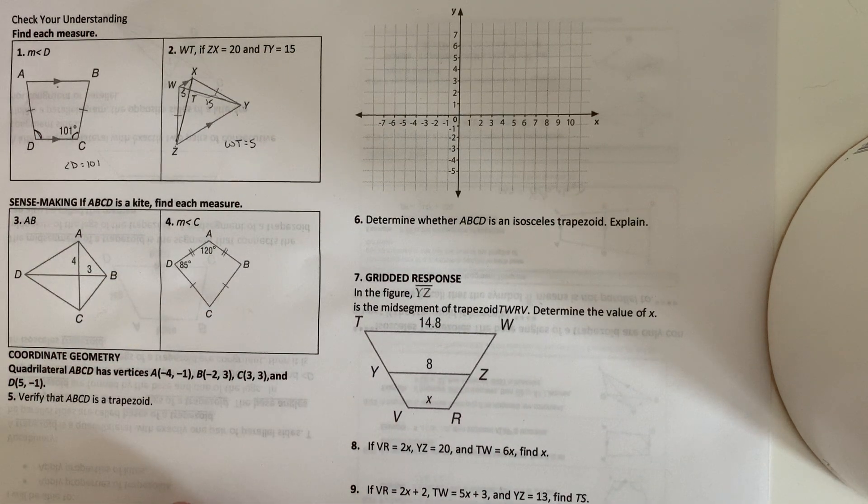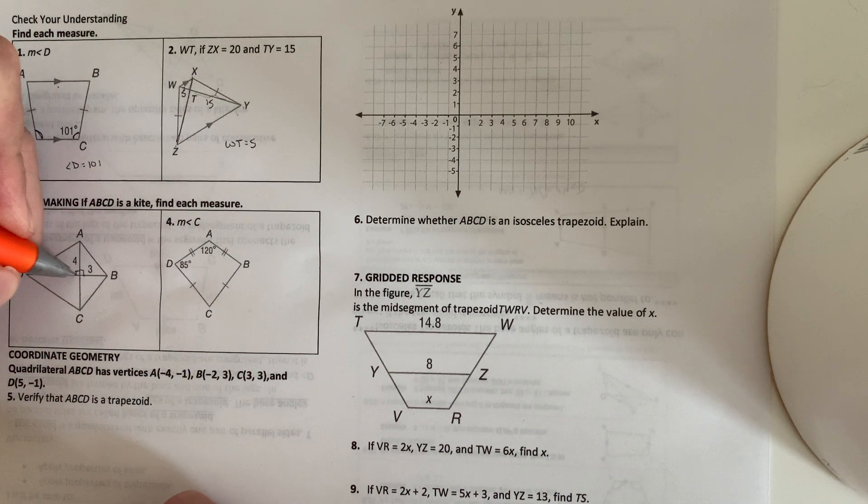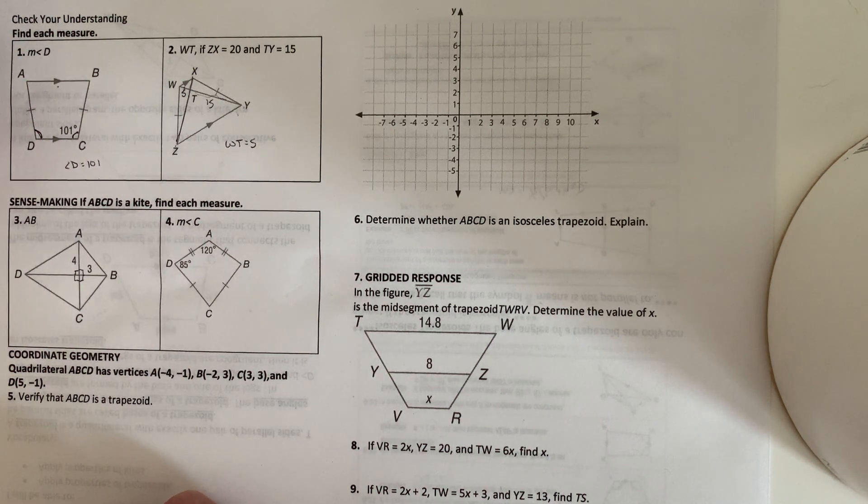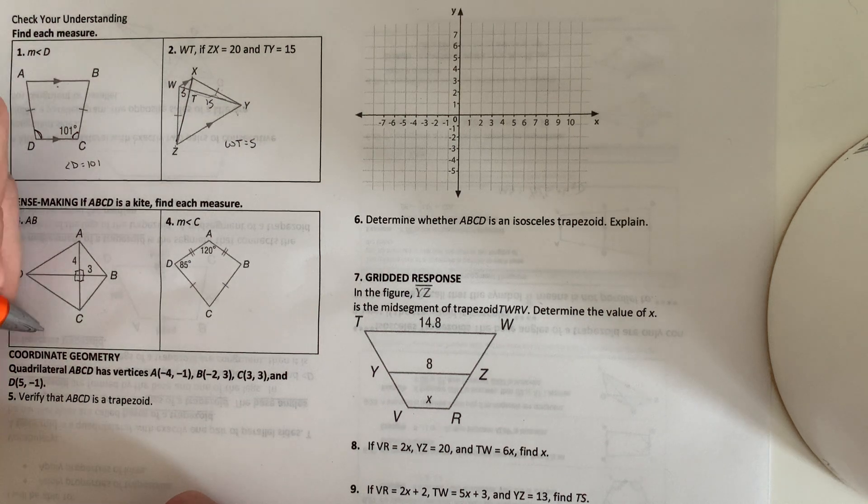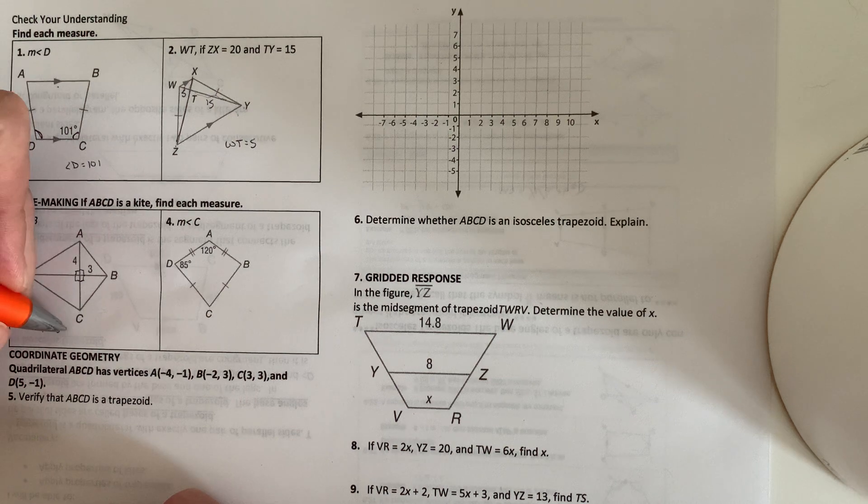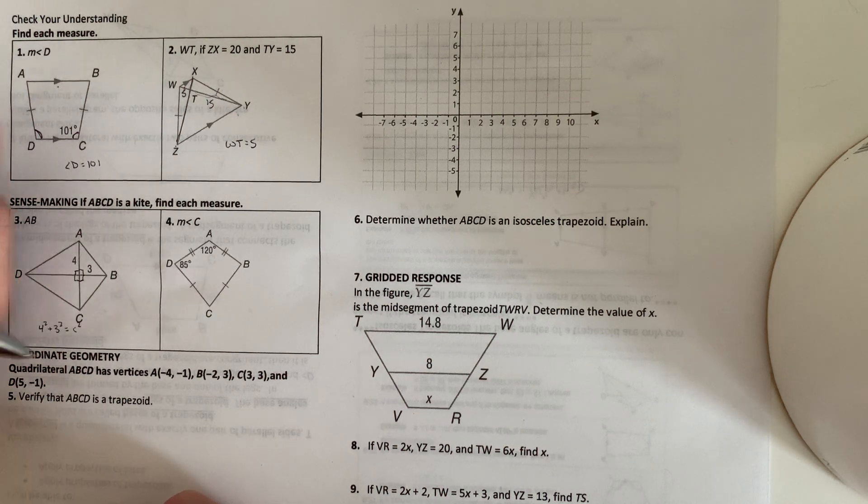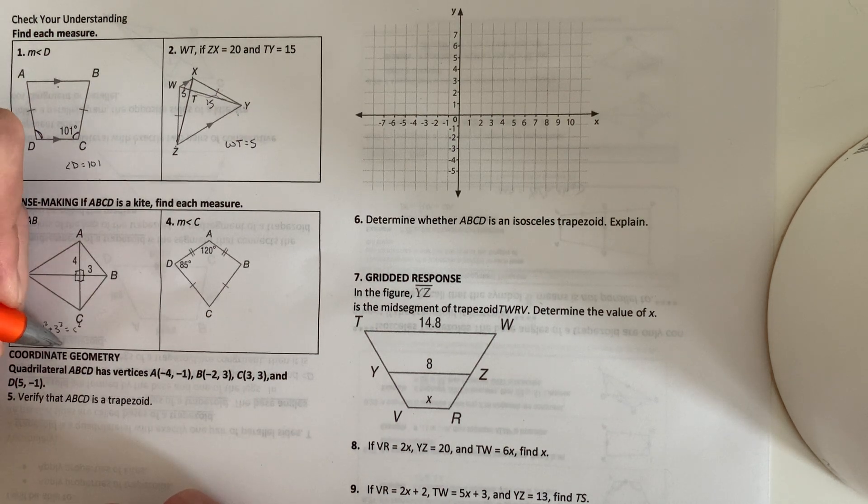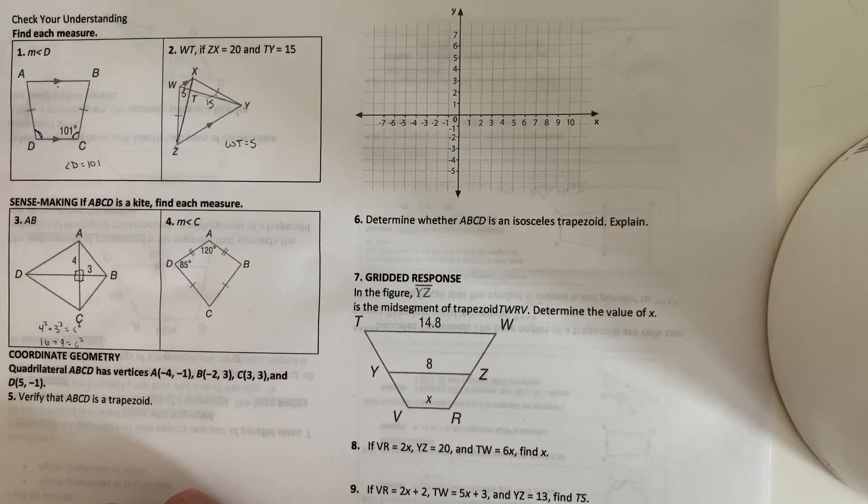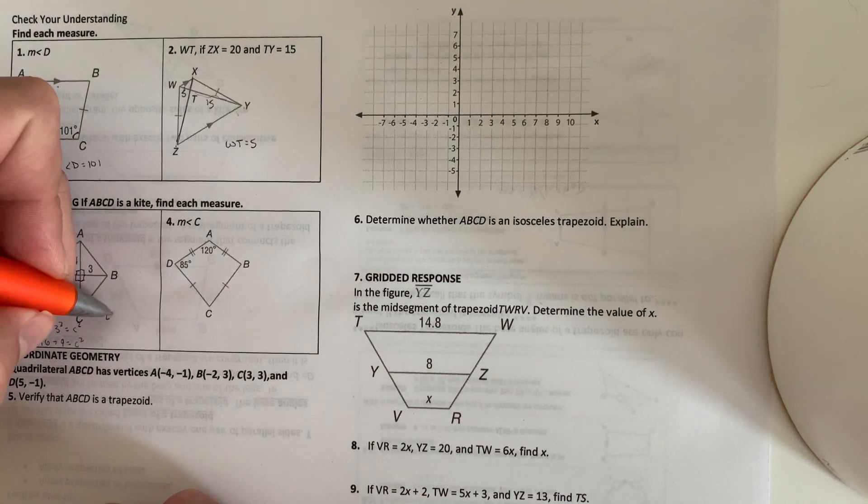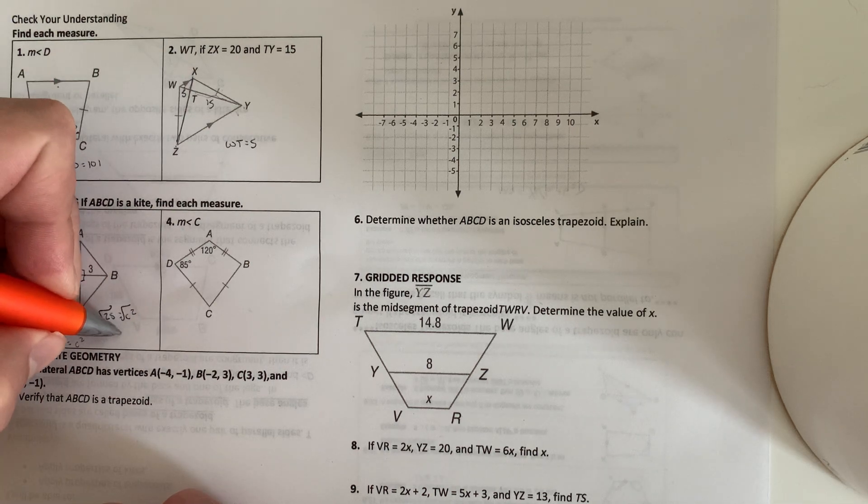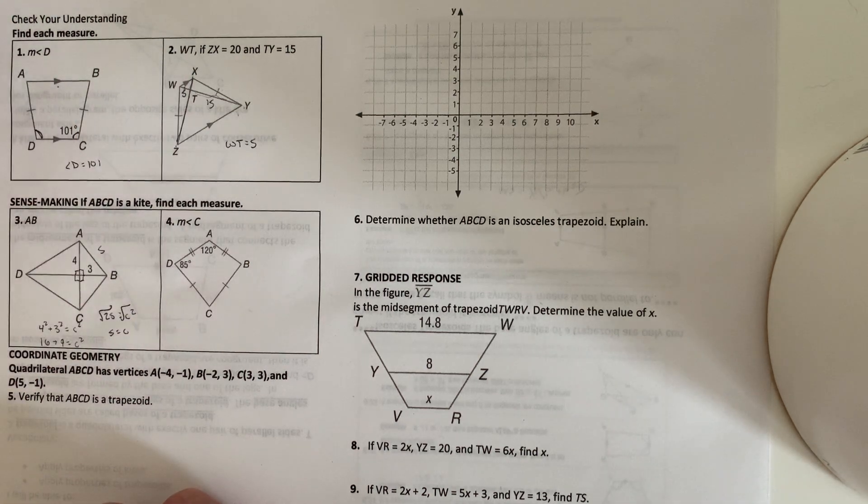Try to find AB. And this is a kite. So since this is a kite, we know that all these are 90 degree angles here. So this makes this a right triangle. So we can just do the Pythagorean theorem. So 4 squared plus 3 squared equals C squared. 4 squared is 16, 3 squared is 9, equals C squared. 16 plus 9 is 25 equals C squared. Square root both sides. 5 will equal C. So AB is 5.